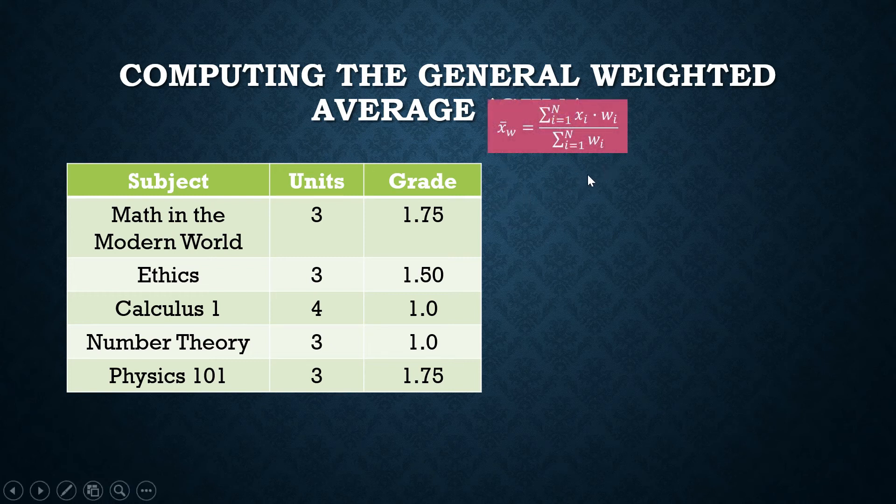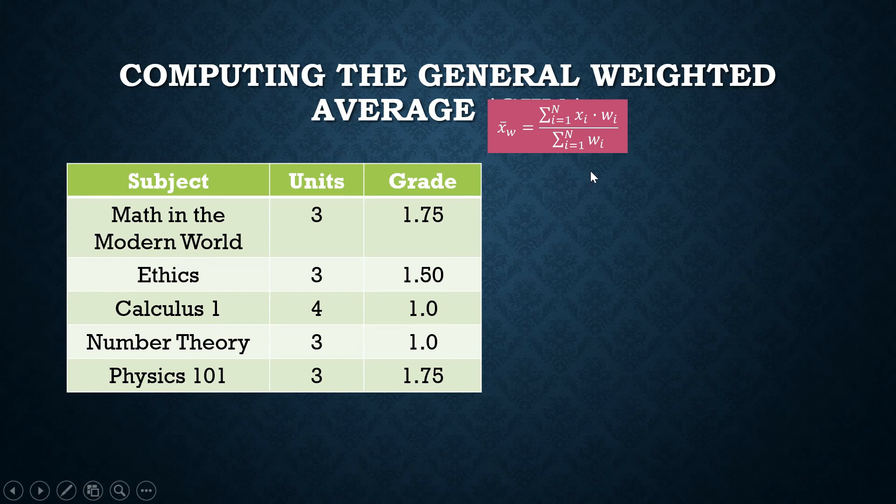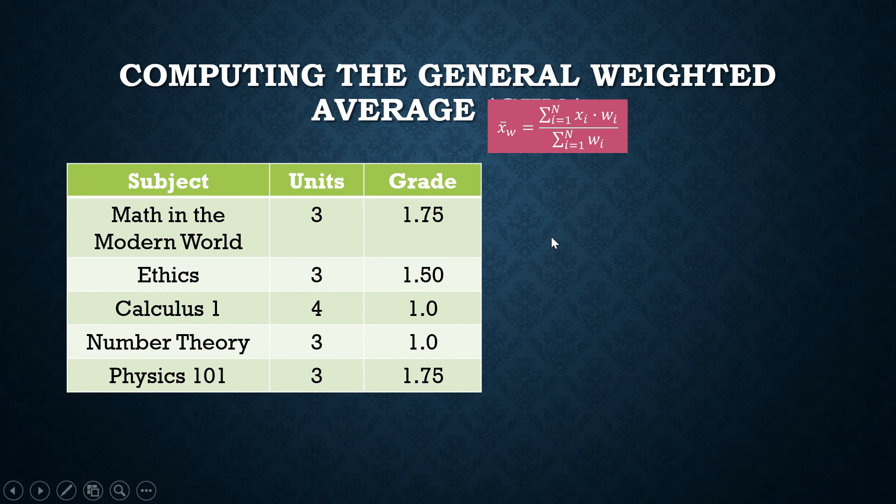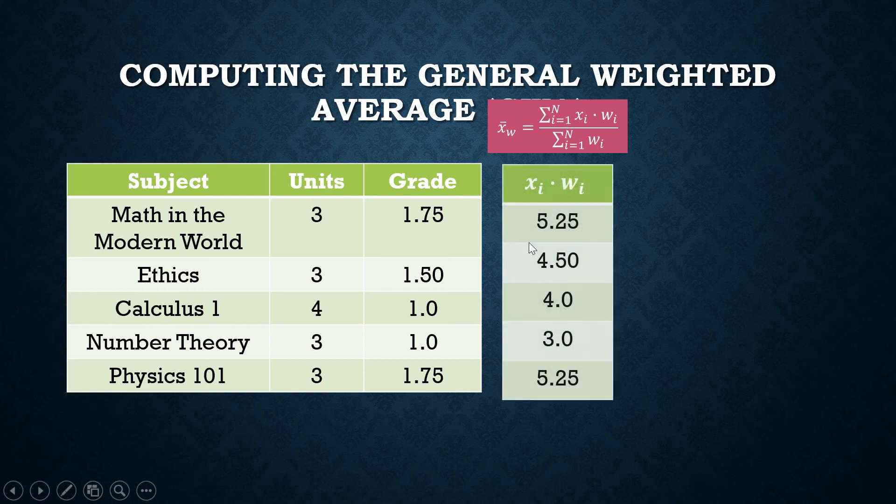We do this: the summation of x sub i times w sub i all over the summation of all the weights. Your x sub i here are your grades: 1.75, 1.5, 1, 1, and 1.75. What do we do? We multiply each of them to the corresponding weights of the subject.